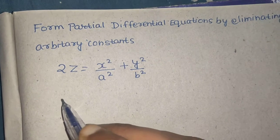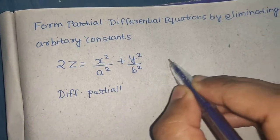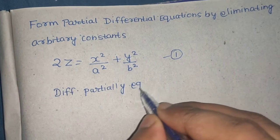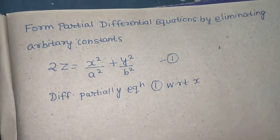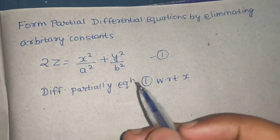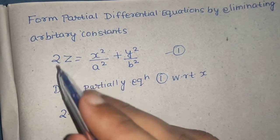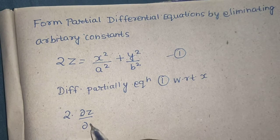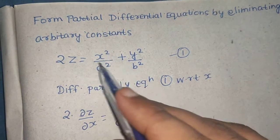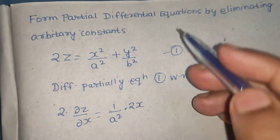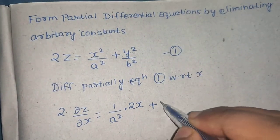So in the first step, we will differentiate — let's name this equation 1 — partially with respect to x. When we differentiate partially with respect to x, y is treated as constant, and a and b are obviously constants. So del z by del x equals: 1 upon a-squared comes out, derivative of x-squared gives 2x; y-squared is constant, b-squared is constant, so that term gives 0.